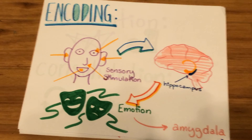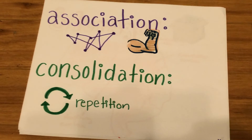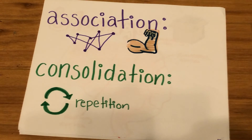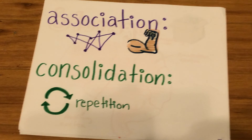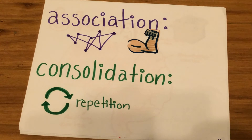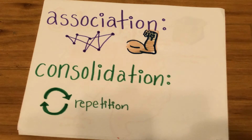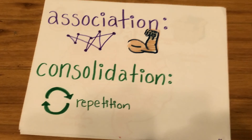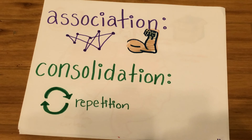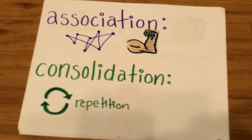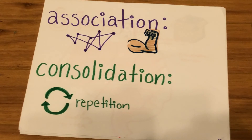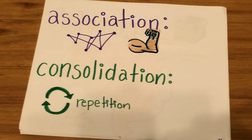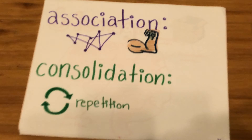Memory is based on association. The stronger the association with past memories, the stronger the memory. Association is the linking of new memories to old ones, making the memory stronger. Memories are also increased through consolidation — the strengthening of the memory after initial acquisition through the repeating firing of certain synapses.